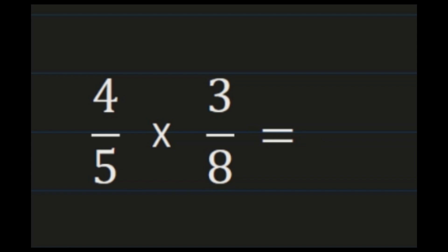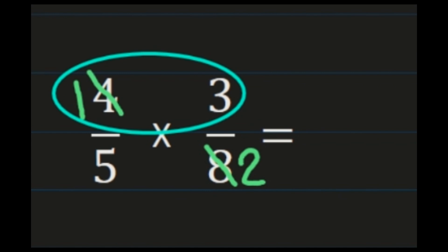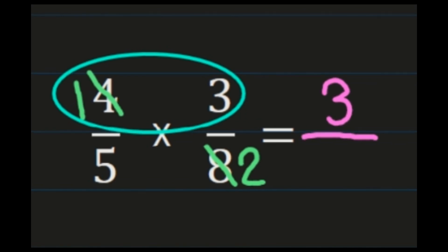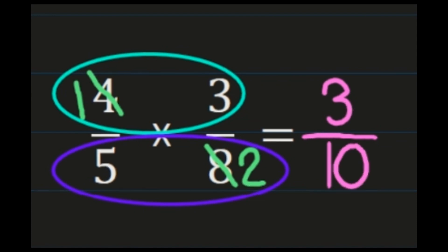I need to look at the numbers across from each other. Looking at 4 and 8, they share a common factor. So 4 divided by 4 is 1, and 8 divided by 4 is 2. Then I multiply the numerators: 3 times 1 is 3. And the denominators: 5 times 2 is 10. Notice I used my simplified numbers when multiplying. So my product is 3 tenths.